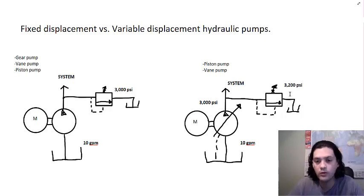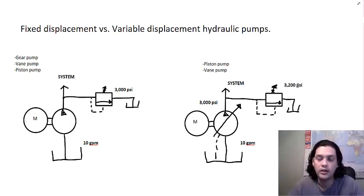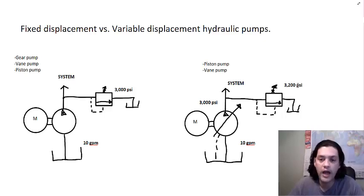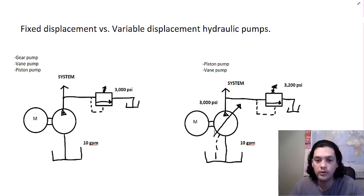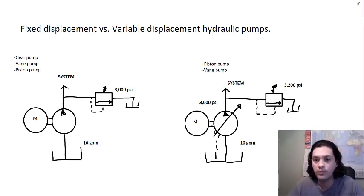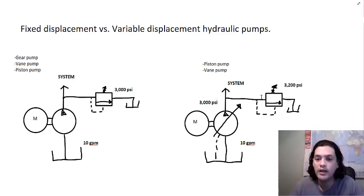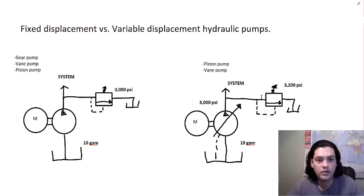You'll also notice on the variable displacement side we have a relief valve set at 3,200 PSI. You would normally still have a relief valve in the system when using a variable displacement pump — that's for safety. Even though the pump is controlled by the pump control's maximum pressure setting, if anything goes wrong with the pump or the system, the relief valve is there as extra protection.